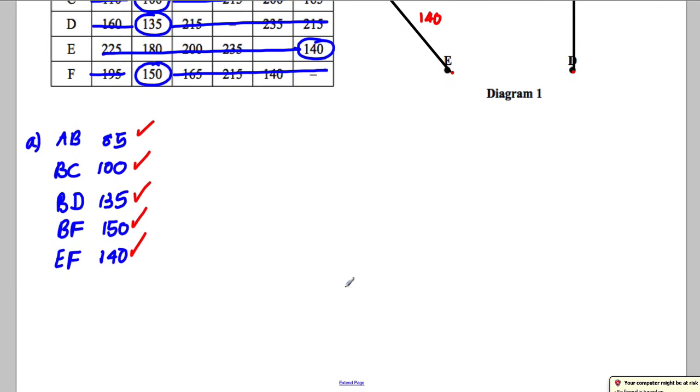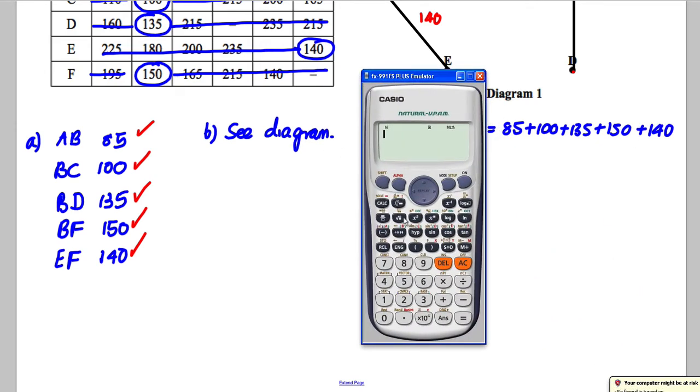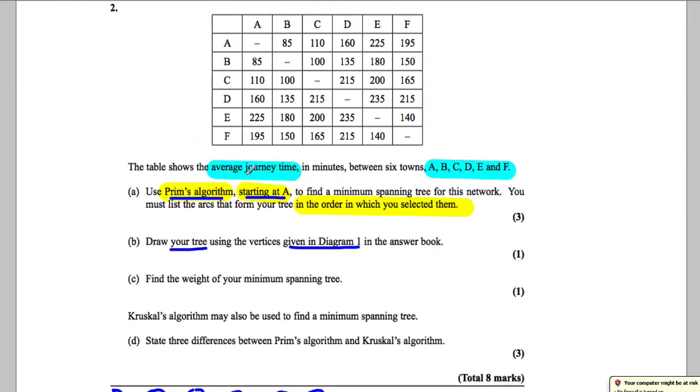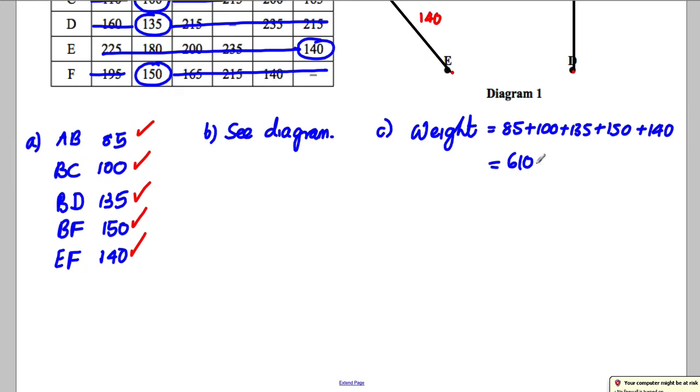Find the weight of your minimum spanning tree. Well this is super easy this part here. So we've done B, C diagram. So for part C the weight, well we just have to add these numbers up. So the weight is 85, add 100, add 135, add 150, add 140. So get the calculator out. 85, add 100, add 135, add 150, add 140. And we get ourselves 610. Now don't just write 610. Make sure you state the units. This was all about journey times in minutes. So it's 610 minutes. Don't forget the unit. You run the risk of dropping a mark if you do.